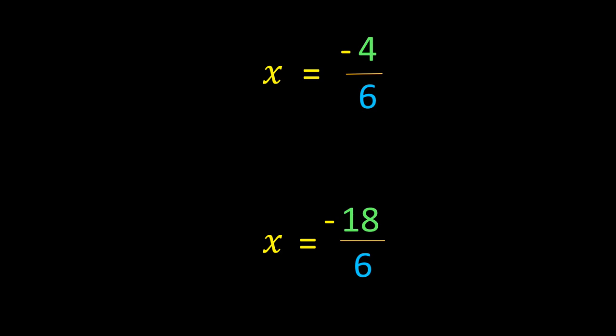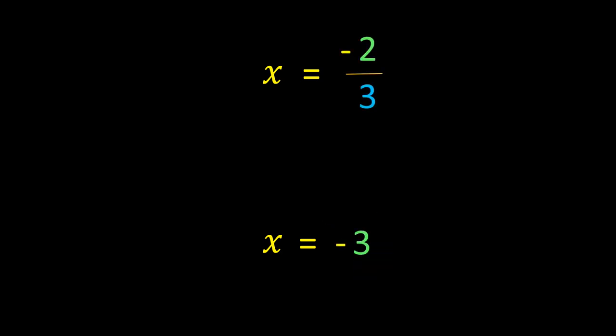These can also be simplified. After simplifying, we get x = -2/3 and x = -3. These two are the roots of the equation 3x² + 11x + 6 = 0. This is how we find the roots of a quadratic equation using the completing the square method. Thank you.